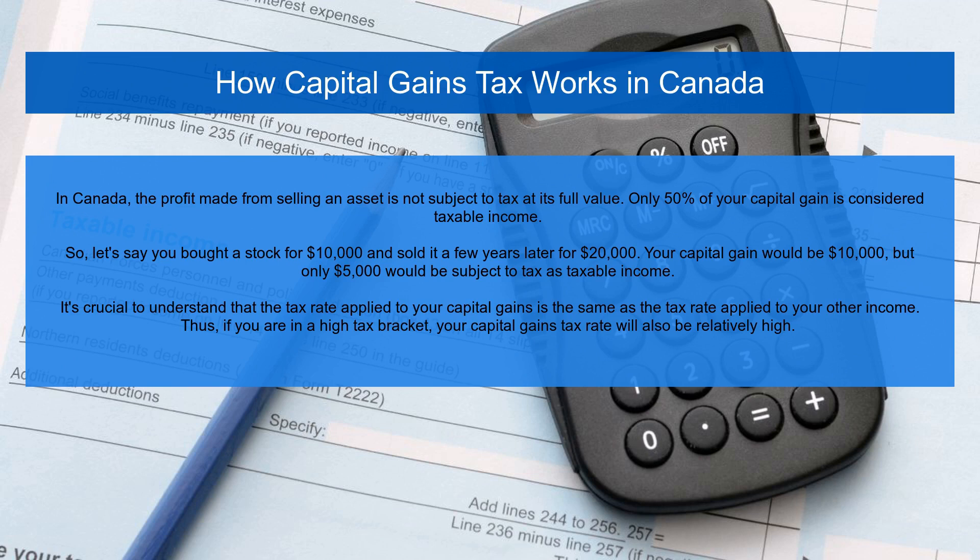Only 50% of your capital gain is considered taxable income. So let's say you bought a stock for ten thousand dollars and sold it a few years later for twenty thousand dollars — your capital gain would be ten thousand dollars, but only five thousand dollars would be subject to tax as taxable income.